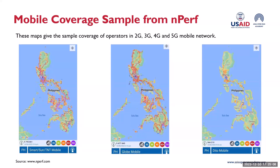On the DITO map on the right side, it displays a sparser distribution of network coverage with focus on key areas. Being the newest player, its coverage is currently more limited compared to established networks like Smart and Globe, but it highlights the potential for new infrastructure and growth in the Philippine telecommunication landscape. As visible in all three maps, 5G is already here — all operators are deploying 5G, which is also relevant in the context of Open RAN.